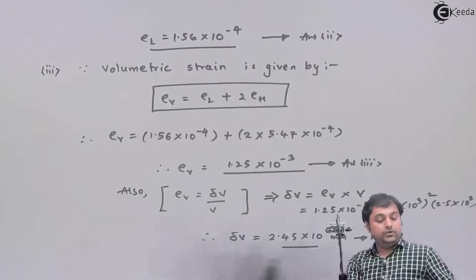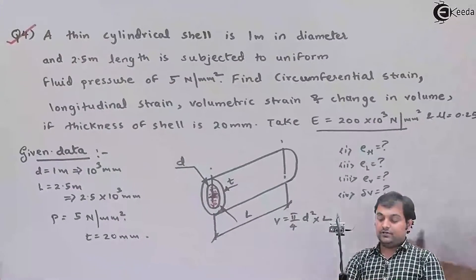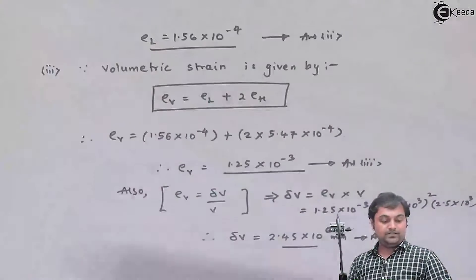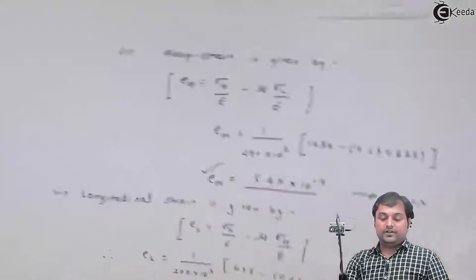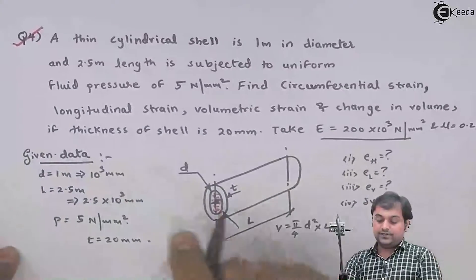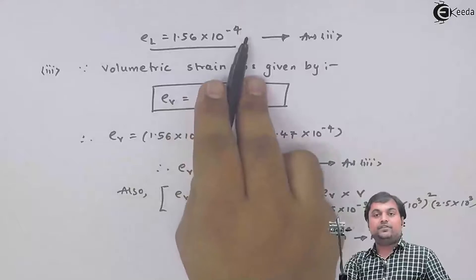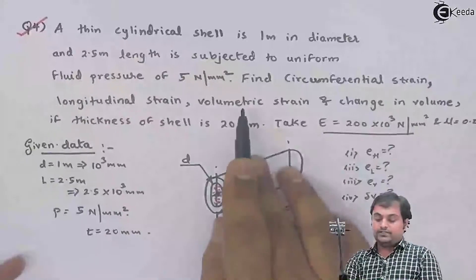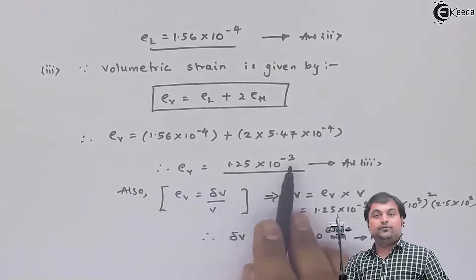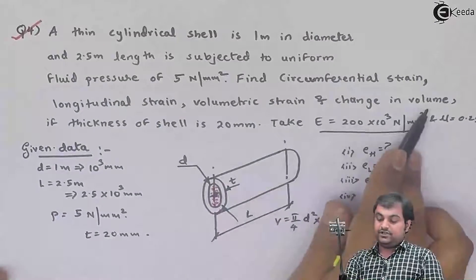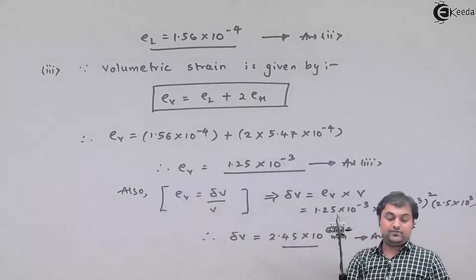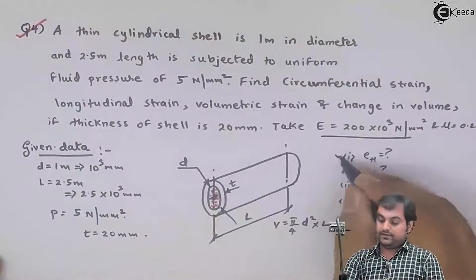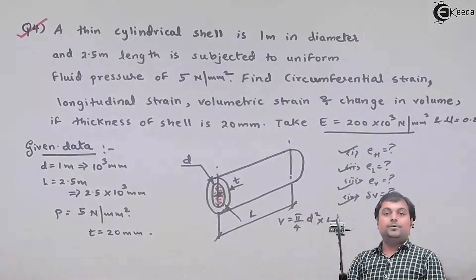To summarize this question: hoop strain = 5.47×10⁻⁴, longitudinal strain = 1.56×10⁻⁴, volumetric strain = 1.25×10⁻³, and change in volume = 2.45×10⁶ mm³. With this, problem number 4 is completed.